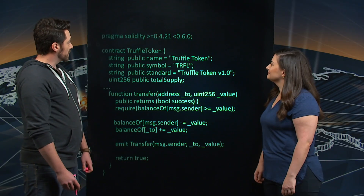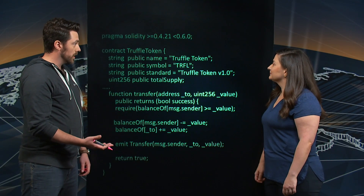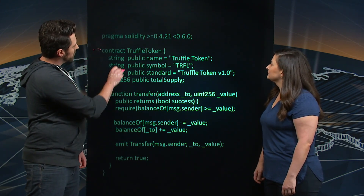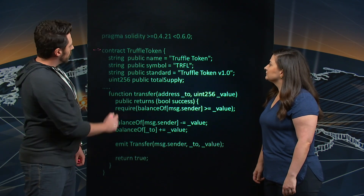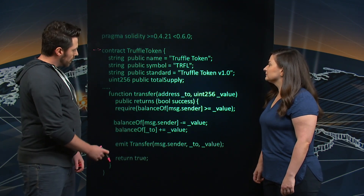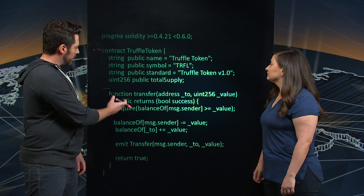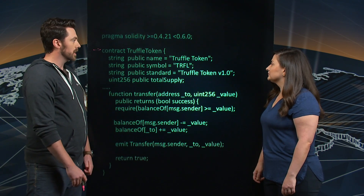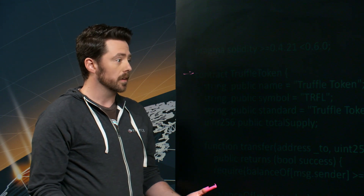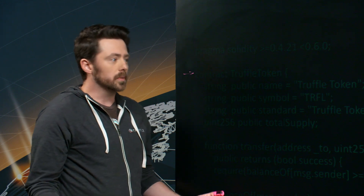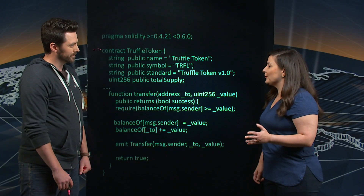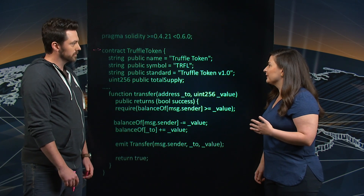The next thing to do is build a smart contract. Here we have an example — a token contract, which is the hot thing to build on top of the blockchain. We've called it Truffle Token. This is where we define the contract itself, give it information about what defines the token we're building, and then we have a function to actually transfer the token. A token might represent a digital asset or a real-life asset that you want to transfer between people.